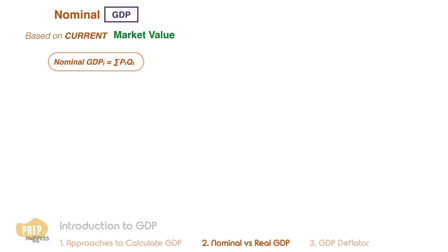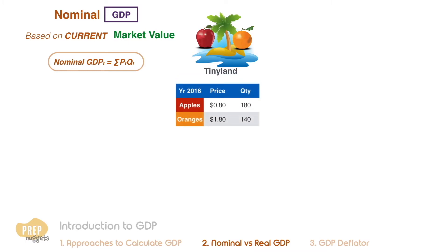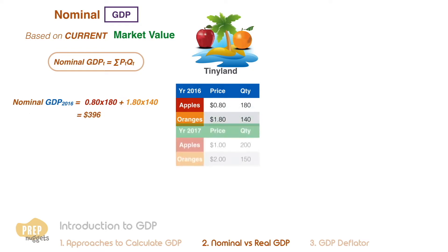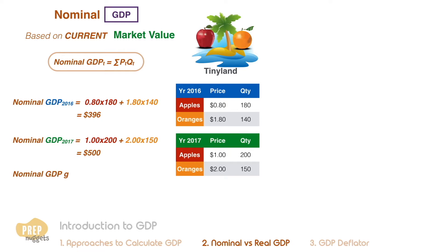For example, if Tiny Land only produces apples and oranges at the following prices and quantity in 2016, the nominal GDP would be $396. The production figures for 2017 give a nominal GDP of $500, which is a whopping 26% GDP growth from 2016.